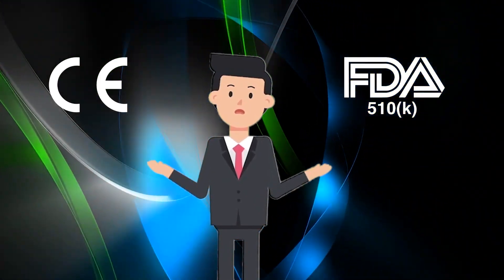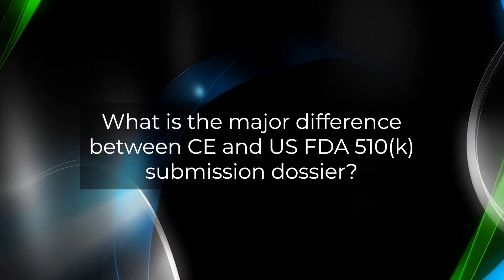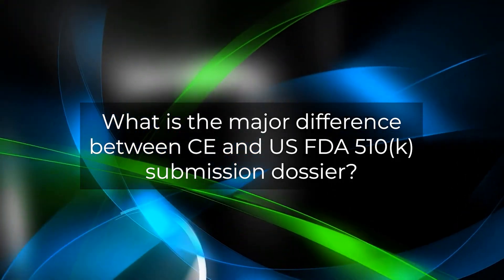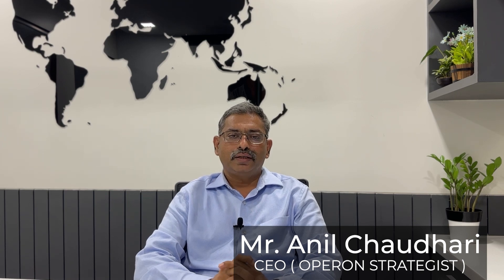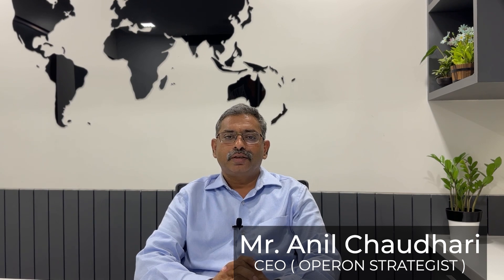Hello Mr. Anil, let's get started. The first question is: what is the major difference between CE mark and US FDA 510k submissions? As far as CE marking goes, the major basis of submission is a clinical evaluation, proving that the product is safe and effective through risk assessment procedures. However, when it comes to 510k, the basic assumption is how equivalent the device is to a predicate device already being sold in the US. So the entire basis for both submissions is very different.